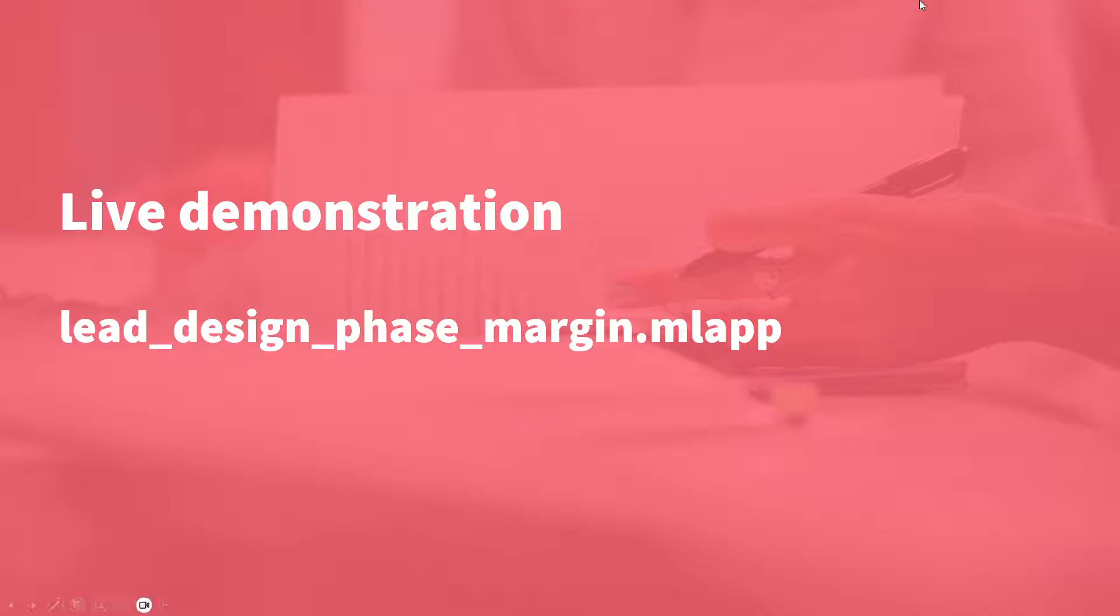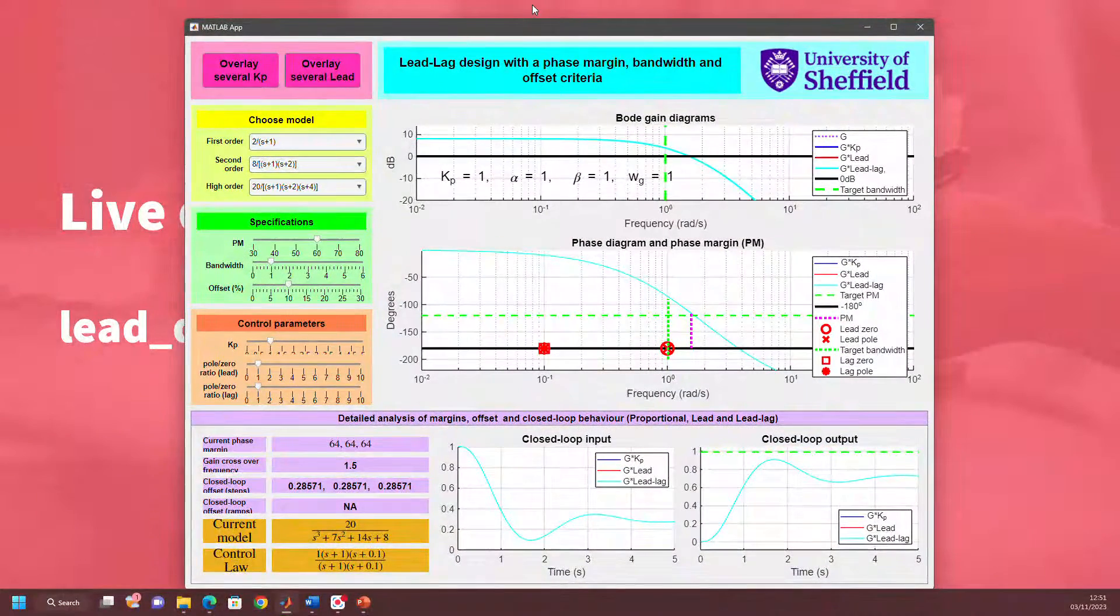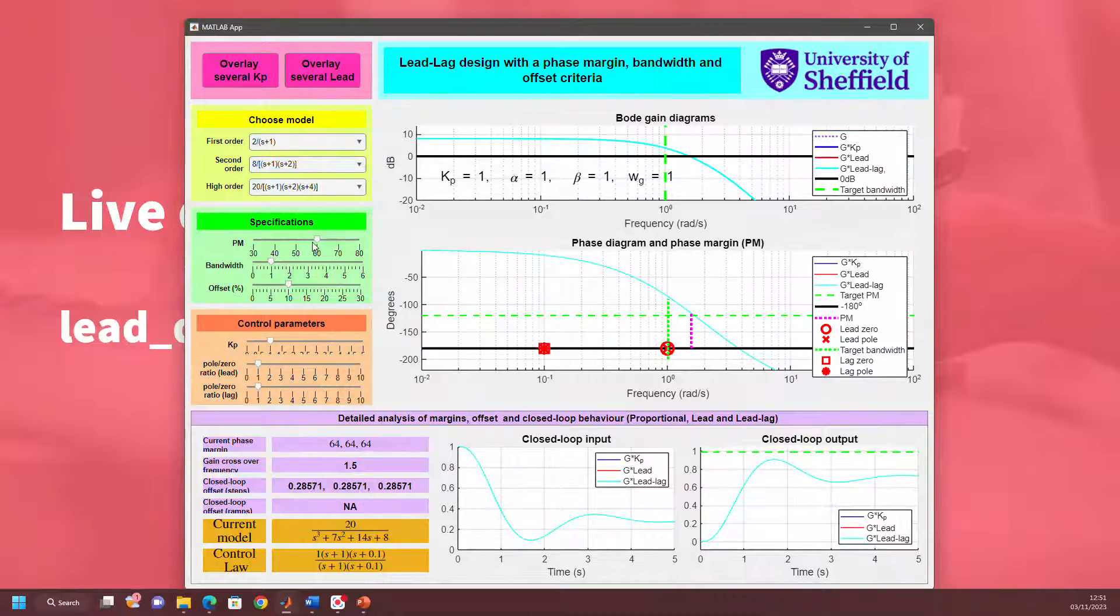Let's look at the app itself. I've got a default system up here, currently with no compensator. If you look at the bottom where it says control law, you'll see it's basically one because all of those poles and zeros cancel. I've set my specifications: currently phase margin of 60, bandwidth of 1, offset of 10%. You can see these green lines basically mark where you have put those criteria. The offset's down in the step response, the phase margin's in the phase plot, and the bandwidth is in both the gain and the phase plot.